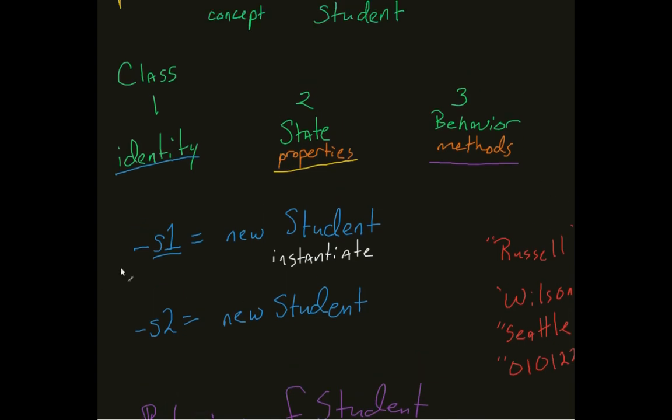Here's one, here's two, S1, S2. They both have their own unique identity. That way I can refer to S1 or S2. They have their own unique properties, Russell Wilson versus Adam Guida. And they have their own unique methods. Get name, for example, S1.get name is going to give me Adam versus S2.get name is going to give me Russell. So, with these three things, we then now have an object.